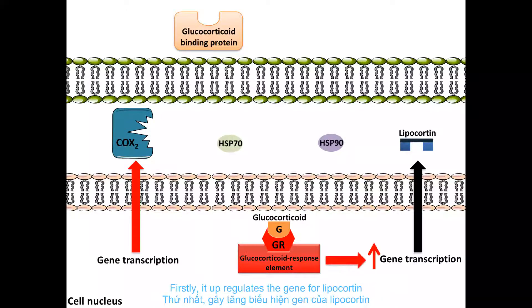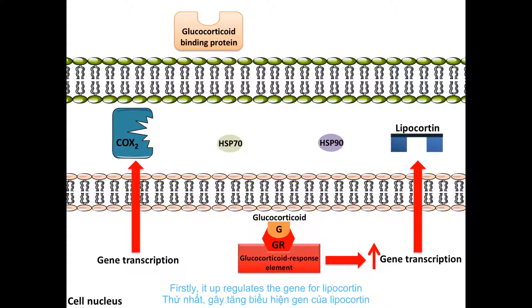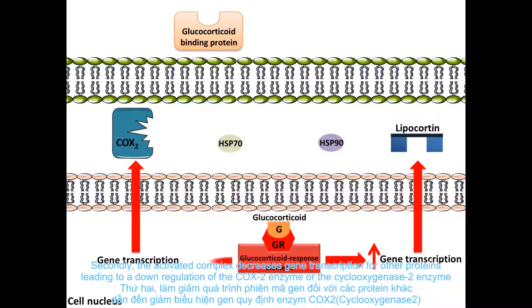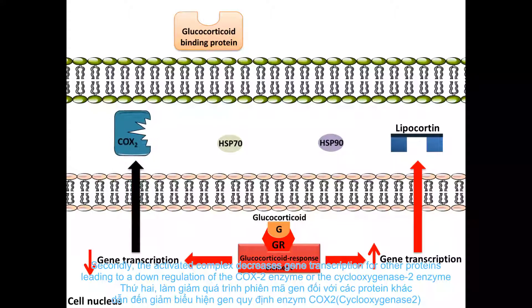Firstly, it upregulates the gene for lipocortin. Secondly, the activated complex decreases gene transcription for other proteins, leading to a downregulation of the COX2 enzyme, or the cyclooxygenase-2 enzyme.